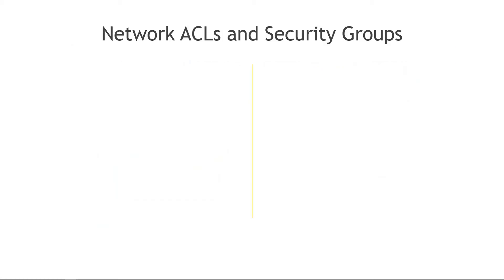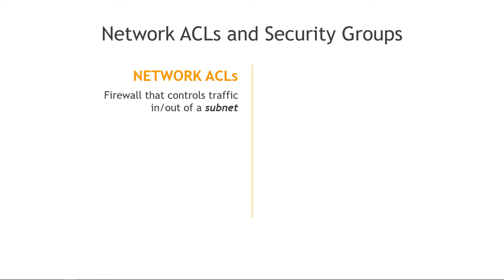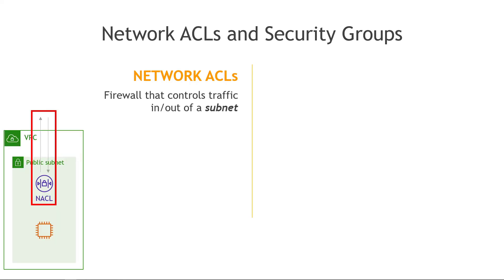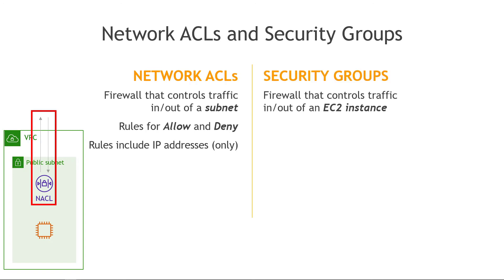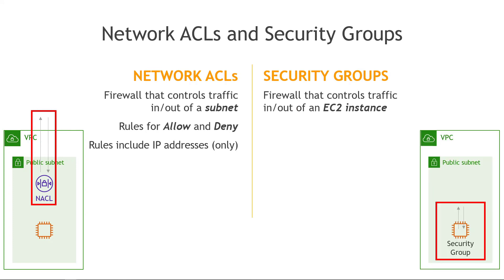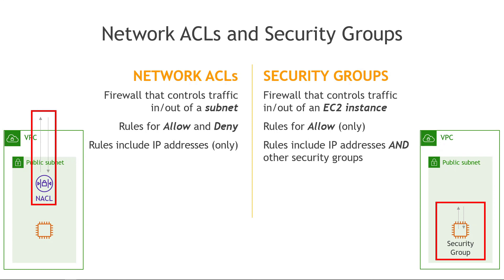Let's talk about how to secure everything. We have Network ACLs — Access Control Lists — and Security Groups. A Network ACL is a firewall that controls traffic in and out of a subnet, attached at the subnet level. It has rules for both allow and deny, and those rules can only use IP addresses — for example, deny traffic from a known attacker's IP. Security Groups are a firewall at the EC2 instance level. They only support allow rules, and in addition to IP addresses, you can reference other Security Groups.